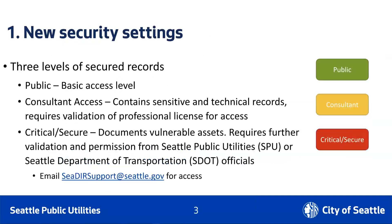Part of the upgrade we've been working on includes upgrading security controls over our collection of infrastructure records. We've implemented a new system that divides records into Public, Consultant, and Critical Secure access levels. Public access includes the majority of our infrastructure records, including site sewer cards, franchise utility maps, historic engineering records, and more modern engineering records including design drawings, record drawings, and as-builts. Consultant access provides access to all records included in the Public access category, but also includes some other records of a more technical and sensitive nature.